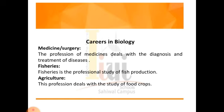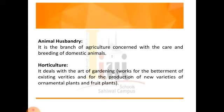Animal husbandry is a branch of agriculture concerned with the care and breeding of domestic animals such as livestock, cattle, and sheep. Professional courses in animal husbandry can be adopted after higher secondary education in biology, both in government and private sectors.